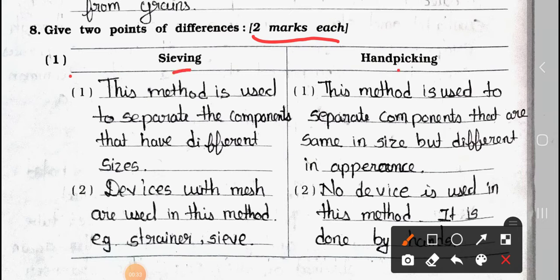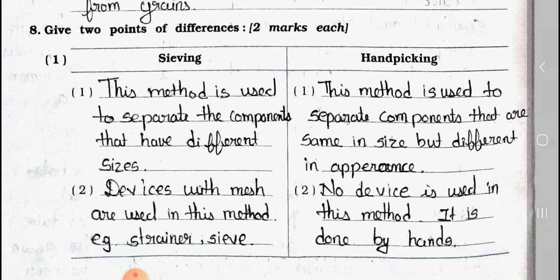Number 1: Sieving and handpicking. Point 1 - In sieving, this method is used to separate the components that have different sizes. And handpicking, this method is used to separate components that are same in size but different in appearance.